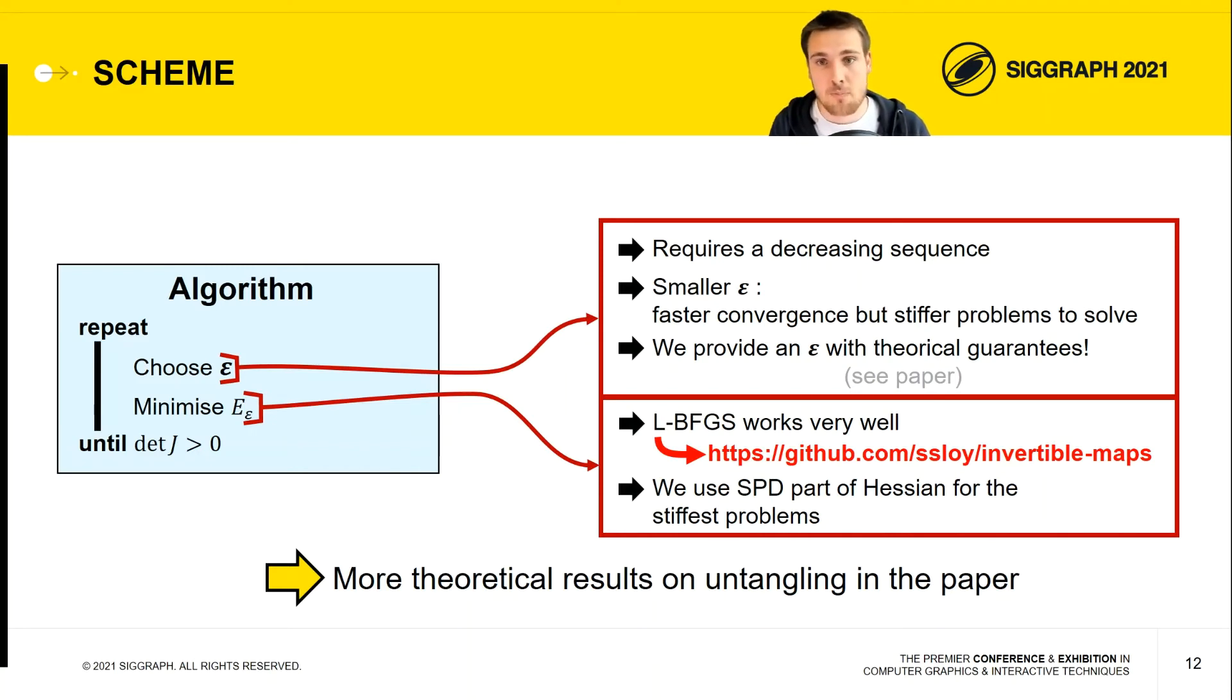In the paper, we provide an epsilon which gives theoretical guarantees that we are going to converge to a nice solution. Moreover, we provide an implementation using LBFGS, which is available on GitHub at the following link.